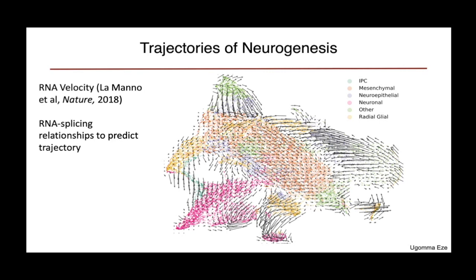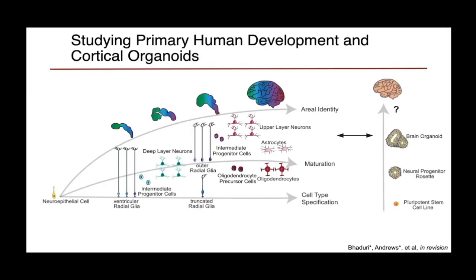While there's a lot to dive into in this data, I'd like to transition and think about ways in which we can apply these data to other questions. One question I've been really interested in is how to model cortical development with organoids. There are many important considerations when thinking about cell types, particularly during developmental stages, including important trajectories of cell type specification that are parallel to trajectories of maturation and areal identity.